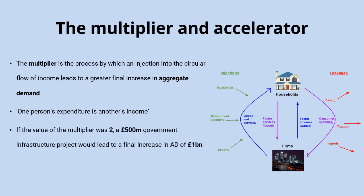So if the value of the multiplier was two, it would mean a £500 government infrastructure project — £500 of government spending injected into the circular flow — would lead to a final increase in aggregate demand of £1,000. And that's because of this recycling of expenditure through the economy.